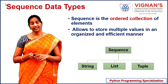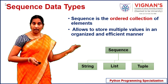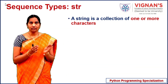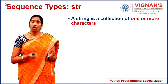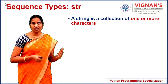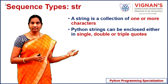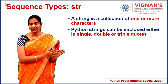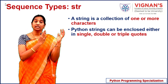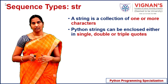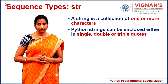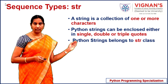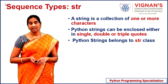Now let's see the details of each sequence type, starting with the string class. A string is a collection of one or more characters where the ordering among characters is preserved. Unlike other languages, Python does not provide a separate data type for a single character — even a single character is treated as a string. Python strings can be enclosed in single quotes, double quotes, or triple quotes, and they belong to the class str.